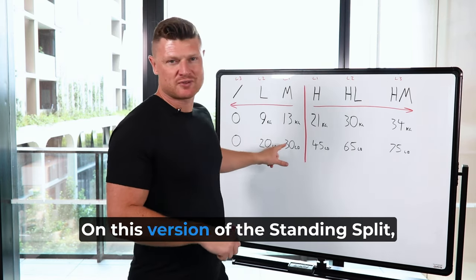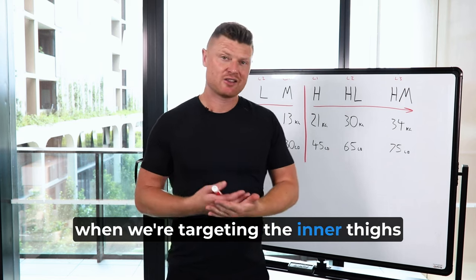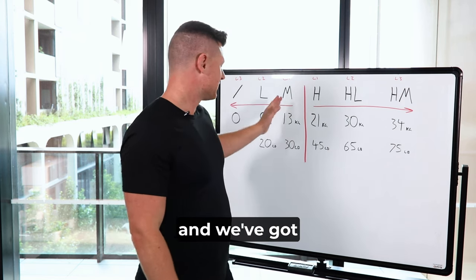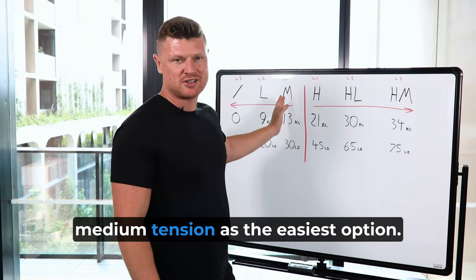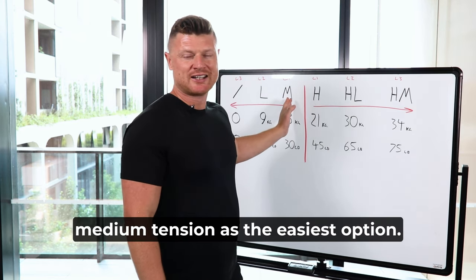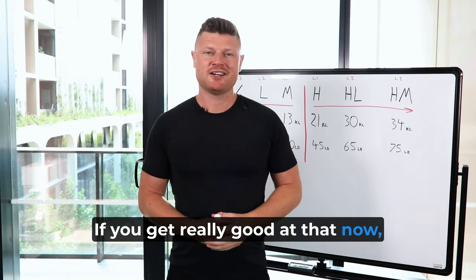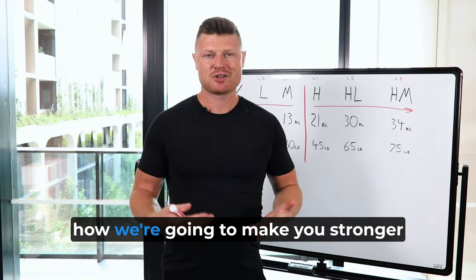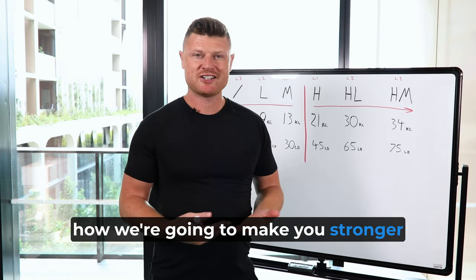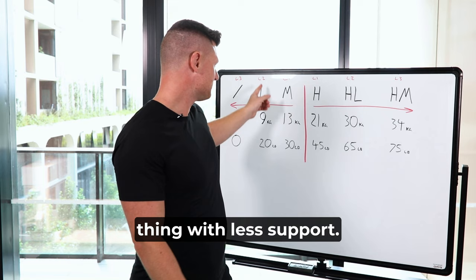It's exactly the same process on the other side. On this version of the standing split, when we're targeting the inner thighs, medium tension is the easiest option. If you get really good at that, the way we're going to make you stronger is by doing the same thing with less support.